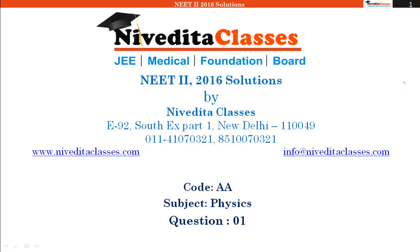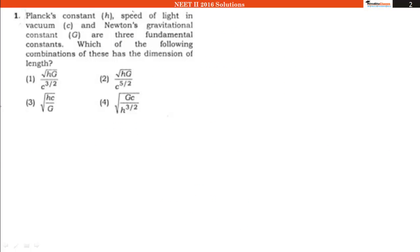Welcome students, welcome to NEET 2016 solutions by Nivedita Classes. Here we will discuss question number one from code AA. The question asks us to match combinations of variables such that the combination has dimensions of length.